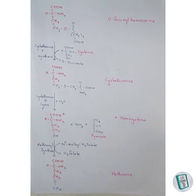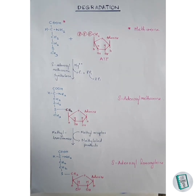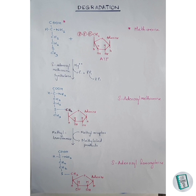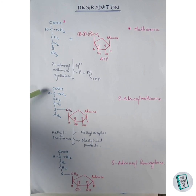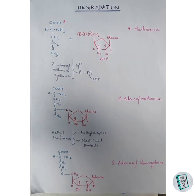Now let us move on to the degradation of methionine, which is a nine-step process. It begins with methionine and ends with succinyl-CoA. Since succinyl-CoA is an intermediate of the TCA cycle, methionine is confirmed as a glucogenic amino acid. In the first step, methionine condenses with ATP to form S-adenosylmethionine (SAM) in the presence of SAM synthase enzyme. During this condensation, all three phosphate groups of ATP are removed and the carbon of ATP joins with the sulfur group of methionine.